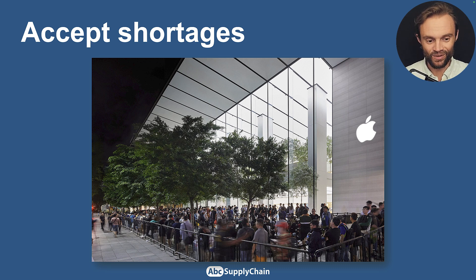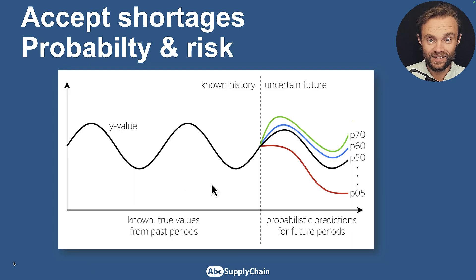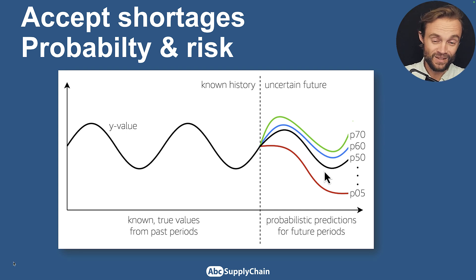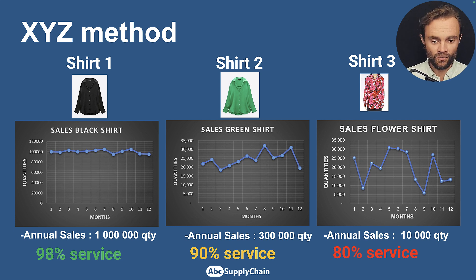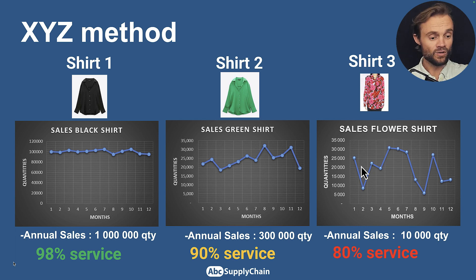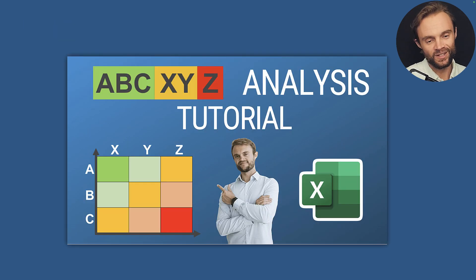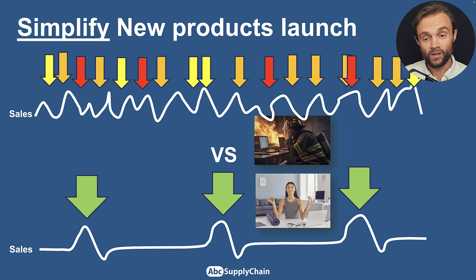Also accept that being out of stock for a new product can actually be good news — it means your customers love the product. Apple plays this game every year with new iPhones — out of stock creates stimulation and prevents excess inventory. Accept shortages and work with probability and levels of uncertainty. For example, using the XYZ method — a very low-profit product should have a lower service target than a highly profitable one. Check my ABC XYZ analysis tutorial if you want to learn more about classifying uncertainty.